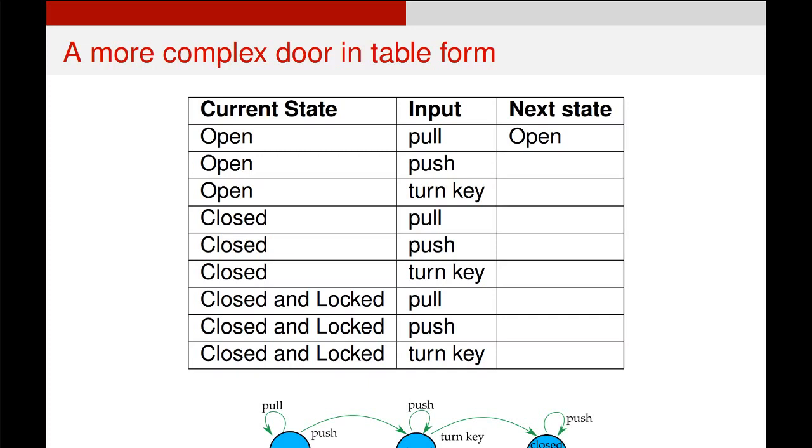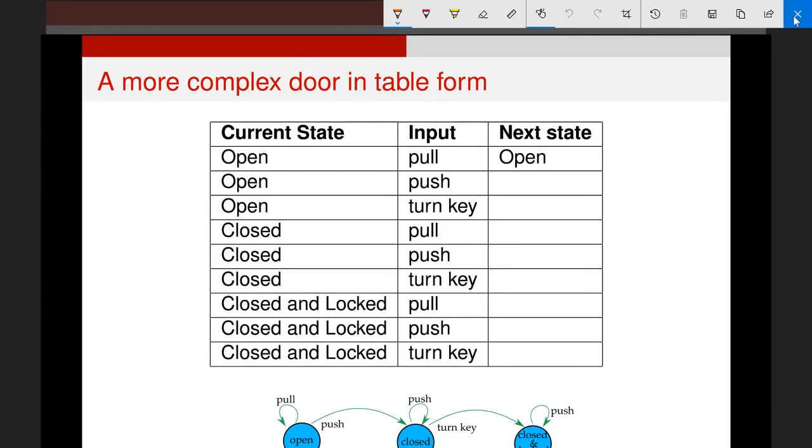It's almost like a truth table for our finite state machine. We start on the left-hand side with a list of all of our different states, this column here. And then we go through and we iterate through our three different senses, our three different inputs. Pull, push, and turn key. And we just describe what happens to our system when it is in this state, and we apply an action to it. It takes us to this state.